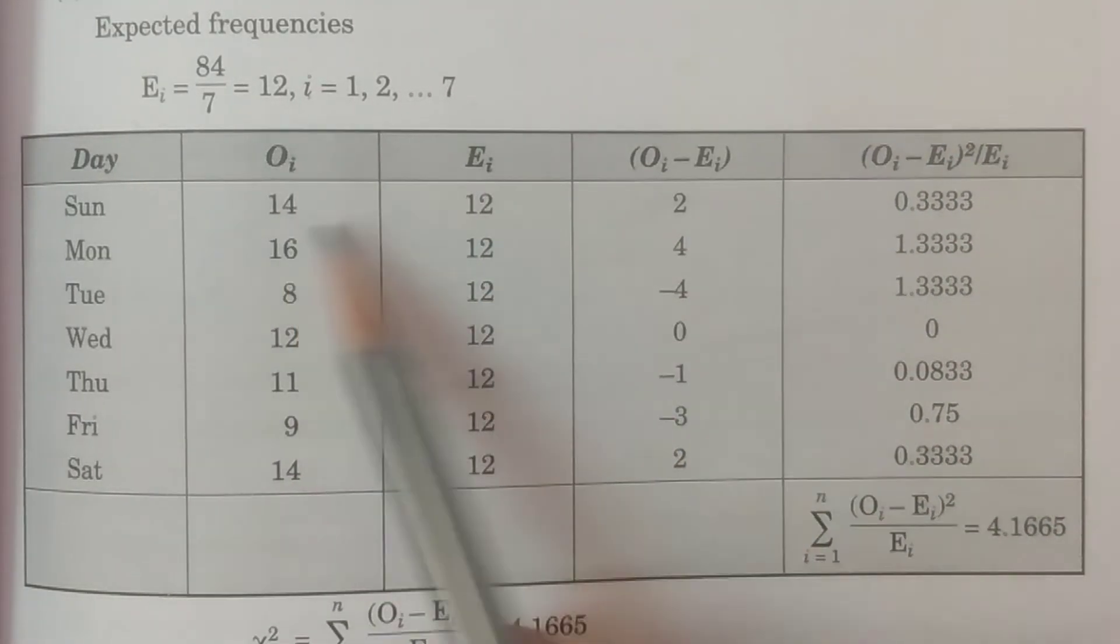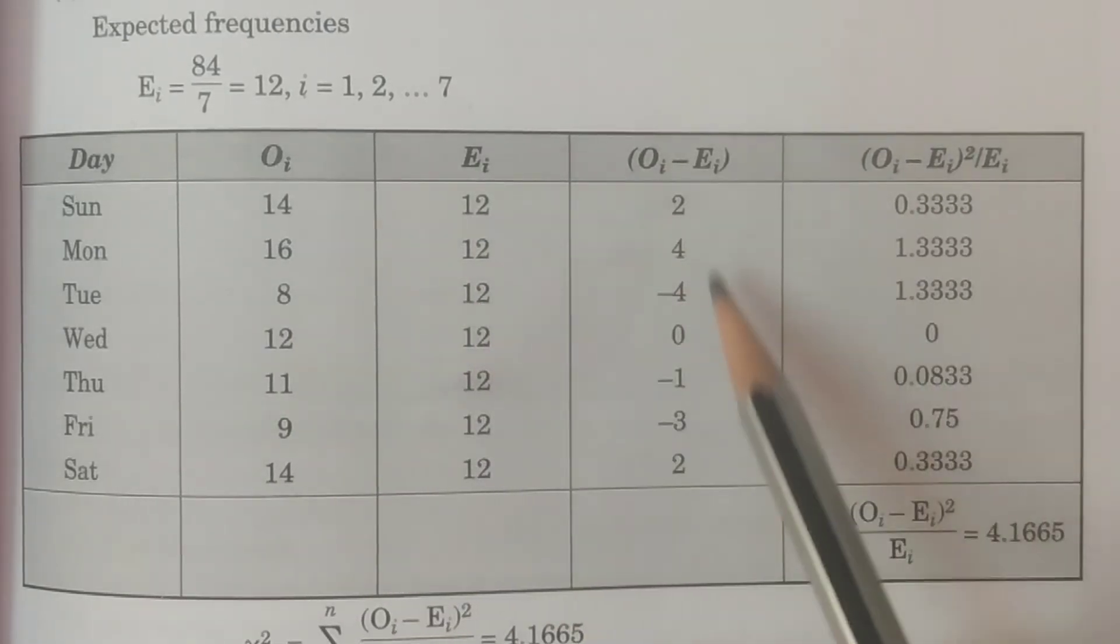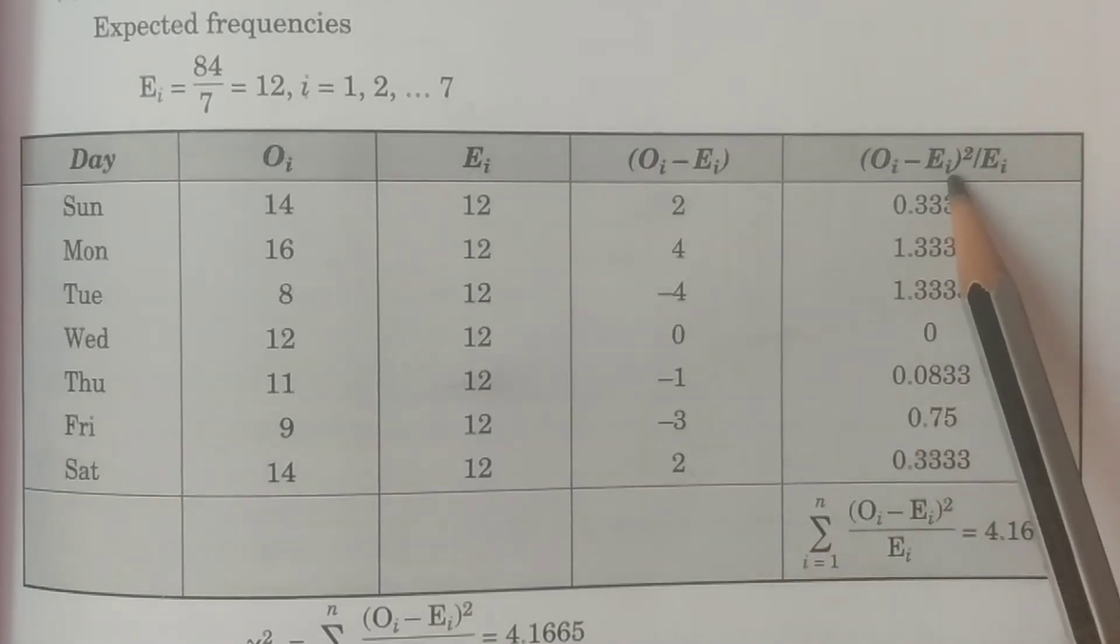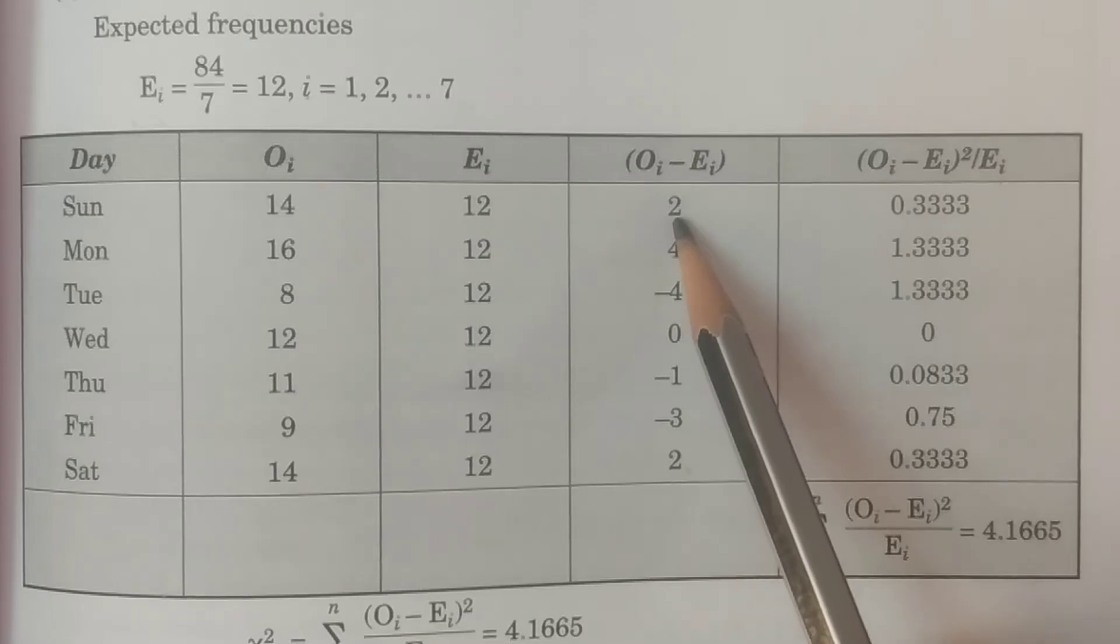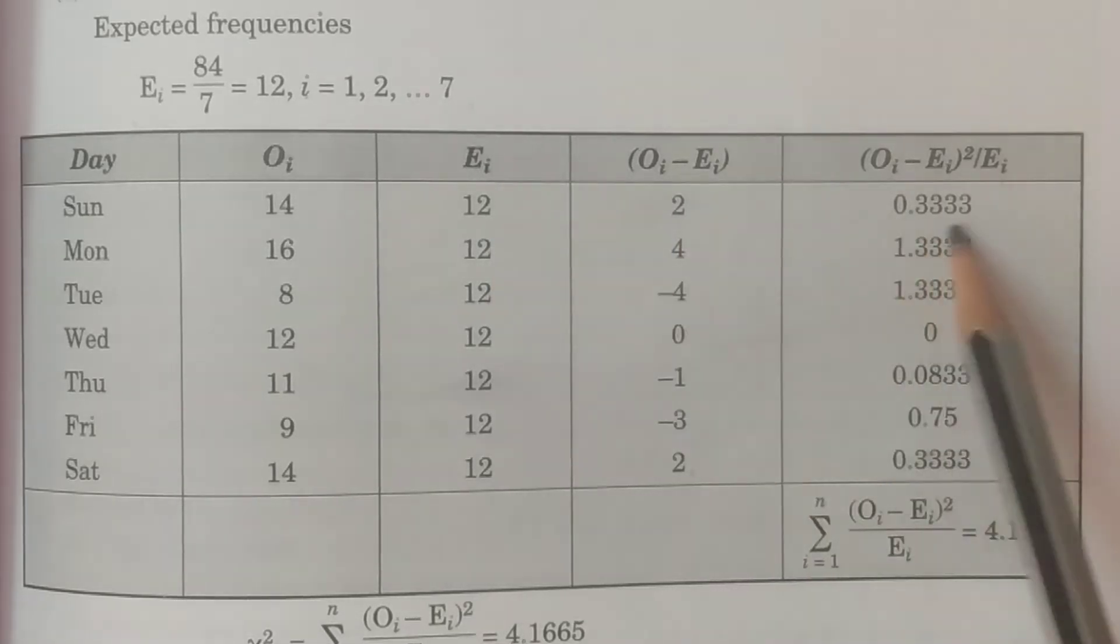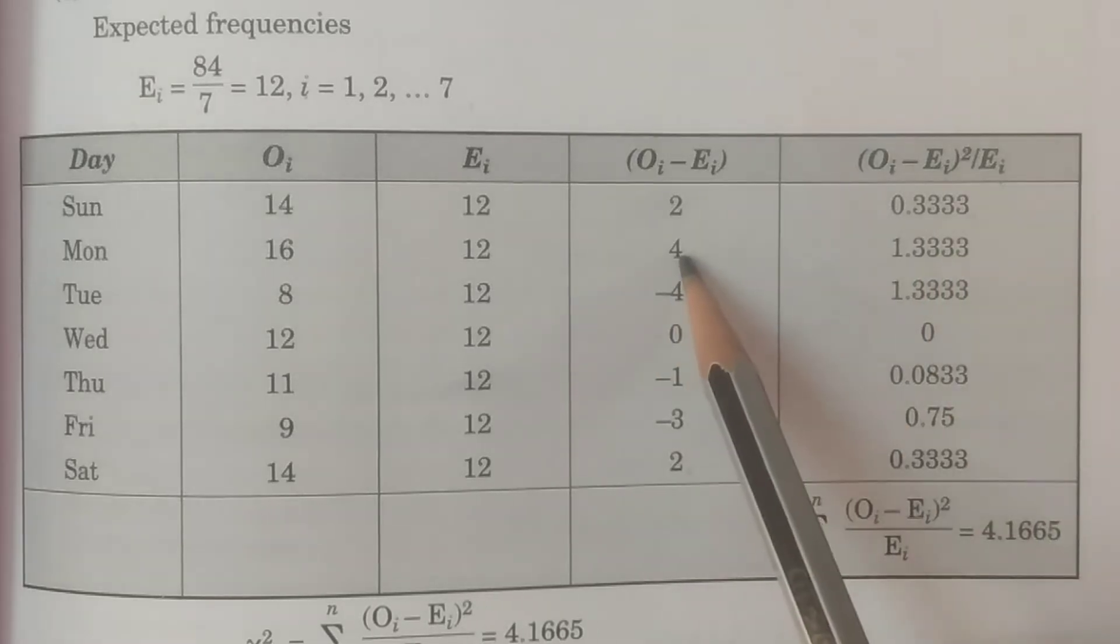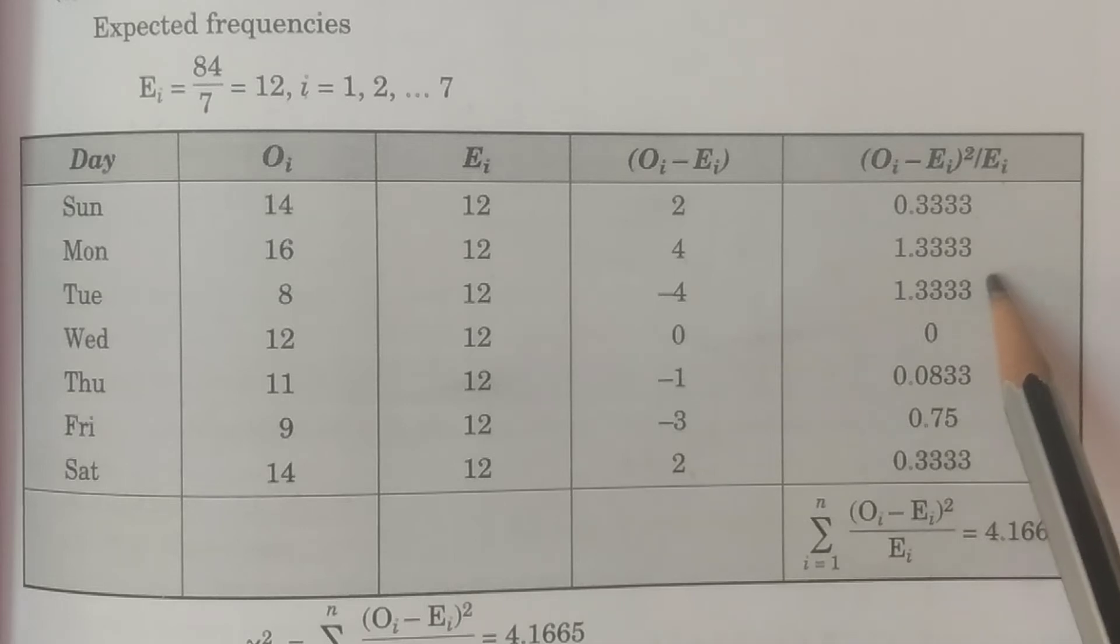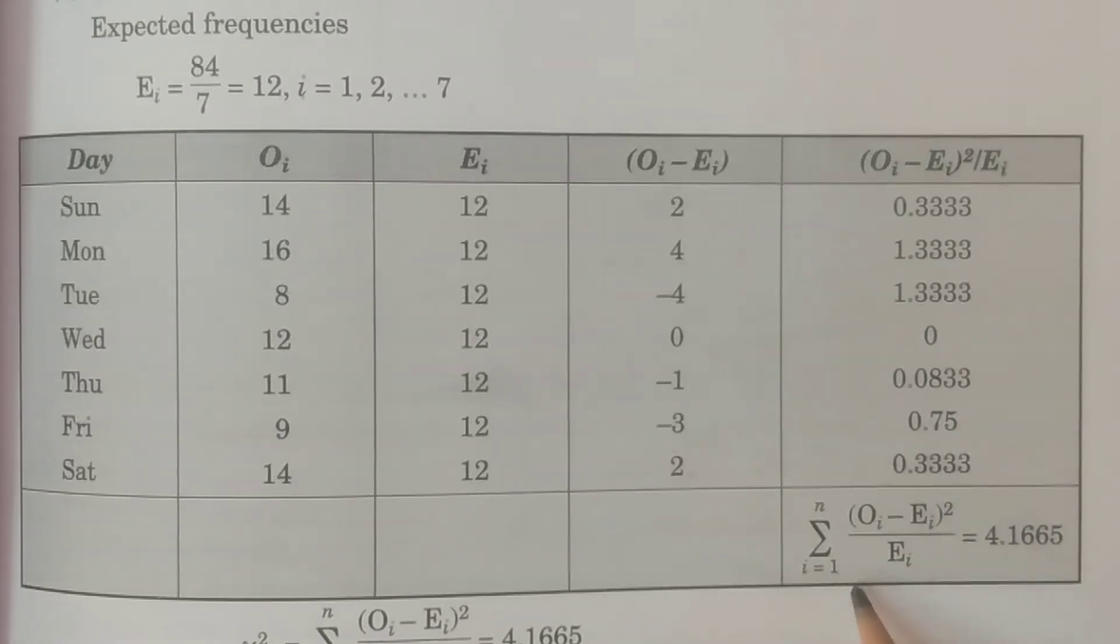So Oi minus Ei means 14 minus 12, 16 minus 12, like that 8 minus 12, like you have to calculate the values and then you have to do the square and divided by Ei. That is 2 square, 4 divided by Ei is 12. This is the value 0.33. Like that you calculate 4 square divided by 12. That's 1.33. You calculate all the values and then you get the summation total.